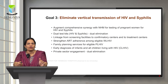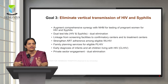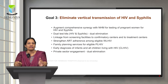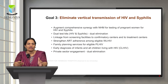Goal 3 — eliminate vertical transmission of HIV and syphilis — strategies include: augment comprehensive synergy with NHM for testing pregnant women for both HIV and syphilis; develop dual test kits addressing dual elimination; ensure linkage from screening facilities to confirmatory centres and treatment centres to prevent dropout; strengthen ART adherence among eligible women living with HIV AIDS through counselling and support; provide family planning services for eligible people living with HIV AIDS; ensure early diagnosis of infants and all children living with HIV; and explore public-private partnerships for dual elimination of HIV and syphilis.